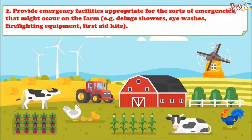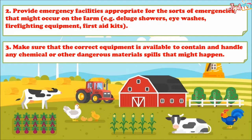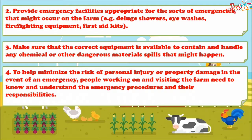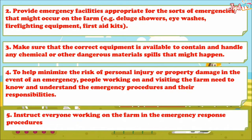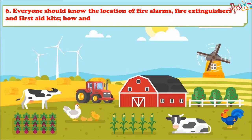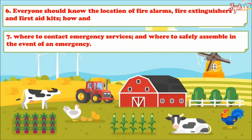Provide emergency facilities appropriate for the source of emergencies that may occur on the farm, like large showers, eye wash stations, fire fighting equipment, and first aid kits. Make sure the correct equipment is available to contain and handle any chemical or dangerous material spills. To help minimize the risk of personal injury or property damage, people working on and visiting the farm need to know the emergency procedures and their responsibilities. Instruct everyone working on the farm in emergency response procedures — they should know the location of fire extinguishers and first aid kits, how and where to contact emergency services, and where to safely assemble in the event of an emergency.